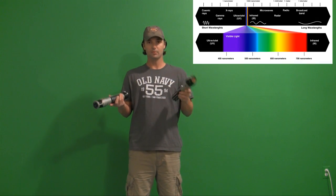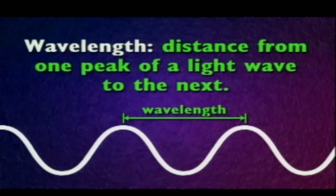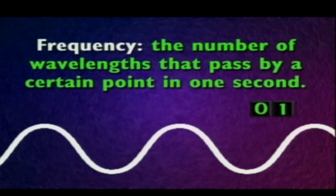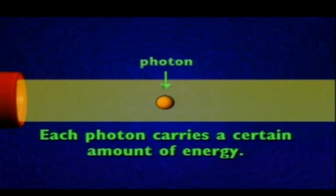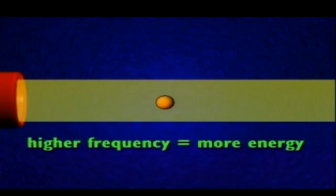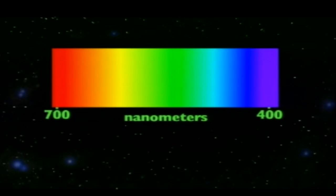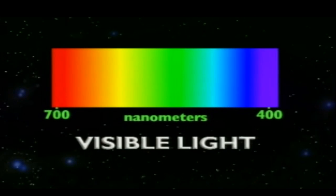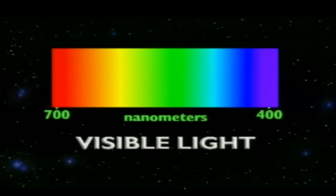We're going by color. If you don't know anything about color, you have to use the visible spectrum. Light is part electricity and part magnetism. All waves have wavelengths and frequencies. A wavelength is the distance from one peak of a light wave to the next. Frequency is the number of wavelengths that pass by a certain point in one second. Photons are the little packets of energy that all light has, and the more frequency the light has, the more energy it carries — so higher frequency means more energy. On the visible light scale, purple has 400 nanometers and red has 700 nanometers, meaning red waves are further apart and purple waves are closer together. ROY G BIV tells you the colors of the visible light spectrum.